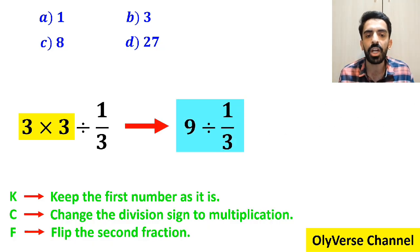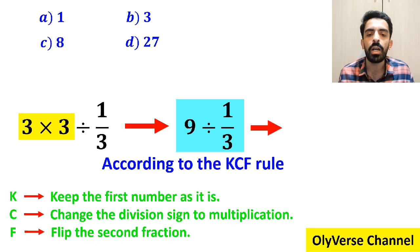And for the part which I have highlighted in blue, according to the KCF rule, we write it as 9 times 3, which results in the final answer 27.